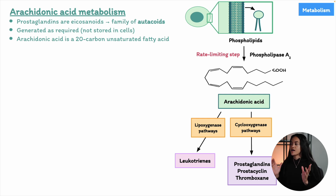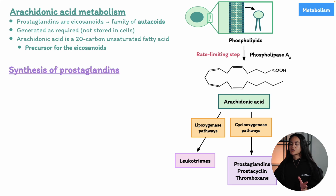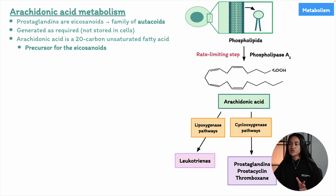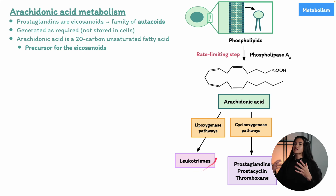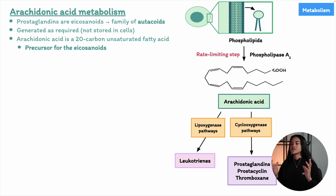Let's go over the basics of arachidonic acid metabolism. This process starts with arachidonic acid, which is stored in the cell membrane as part of phospholipids. It's released when the enzyme phospholipase A2 cleaves it from the membrane — a critical step often referred to as the rate-limiting step. Once released, arachidonic acid can follow several metabolic pathways depending on the type of cell and the specific enzymes present. These pathways include the cyclooxygenase pathway and the lipoxygenase pathway, as well as other enzymatic pathways.